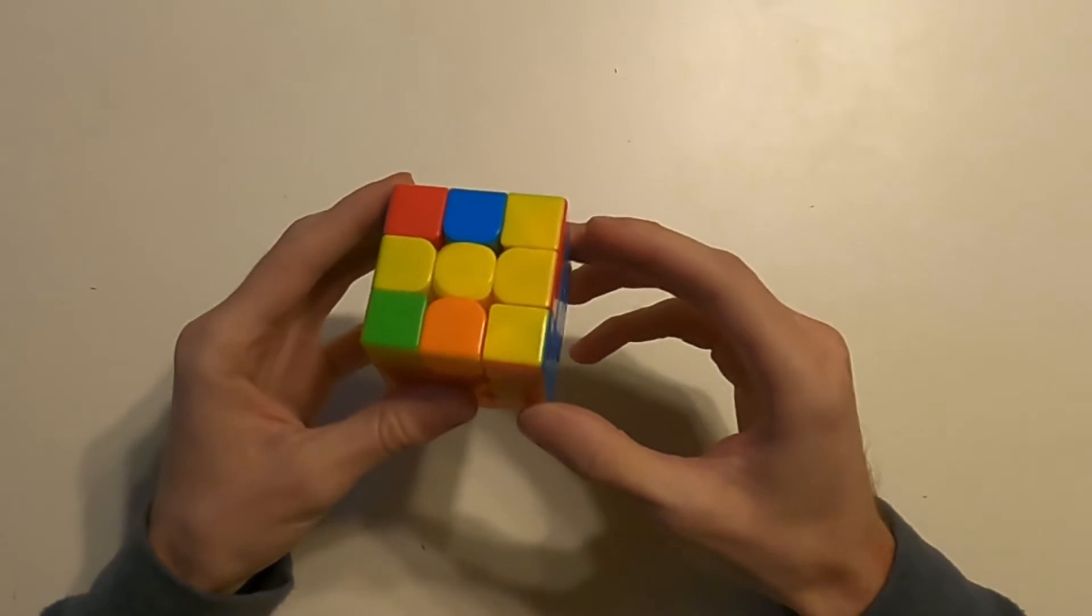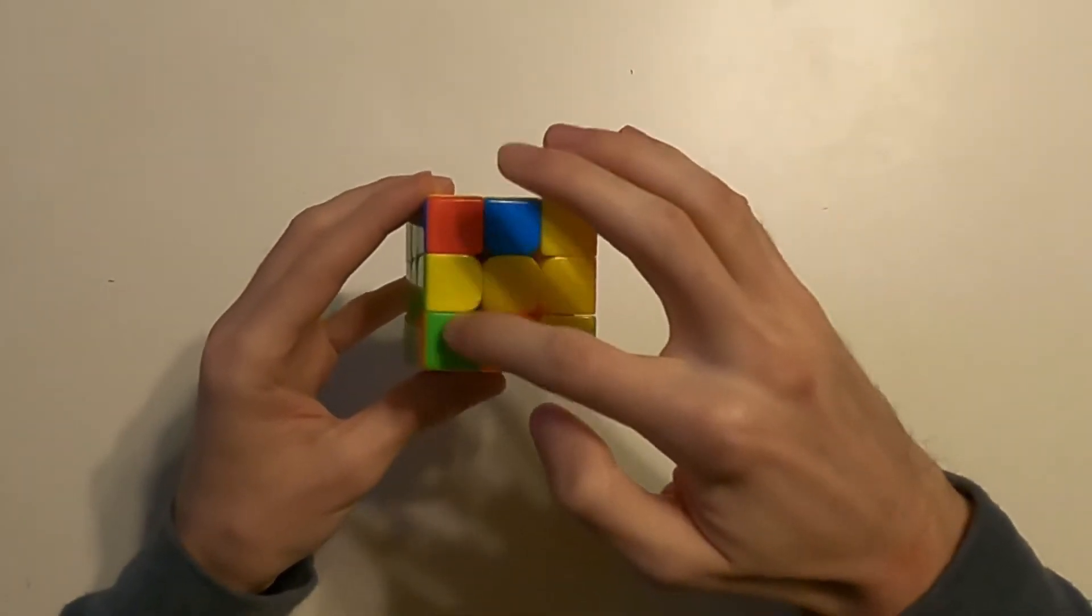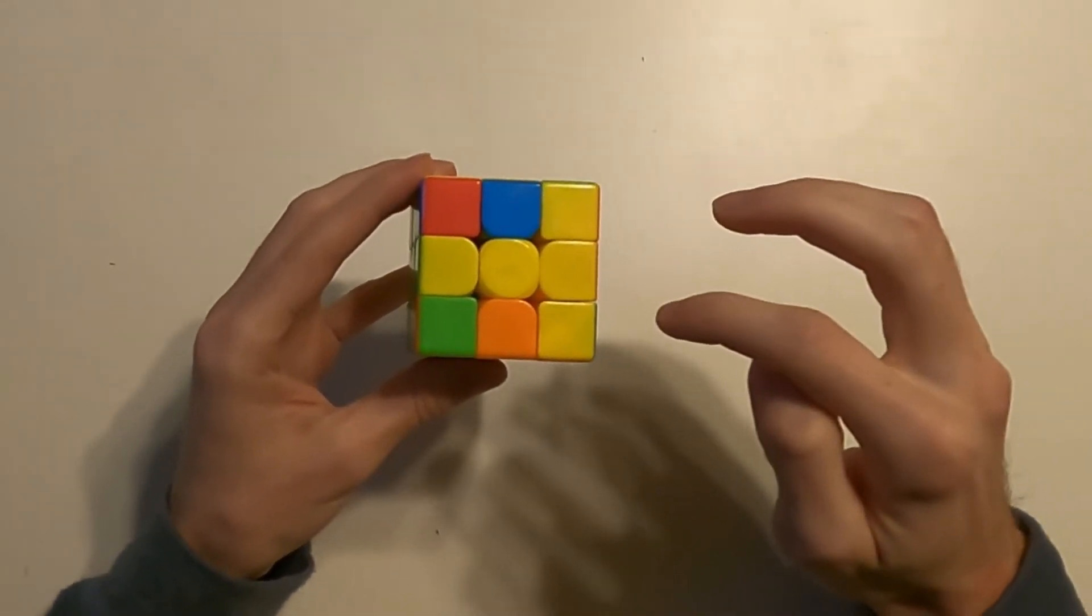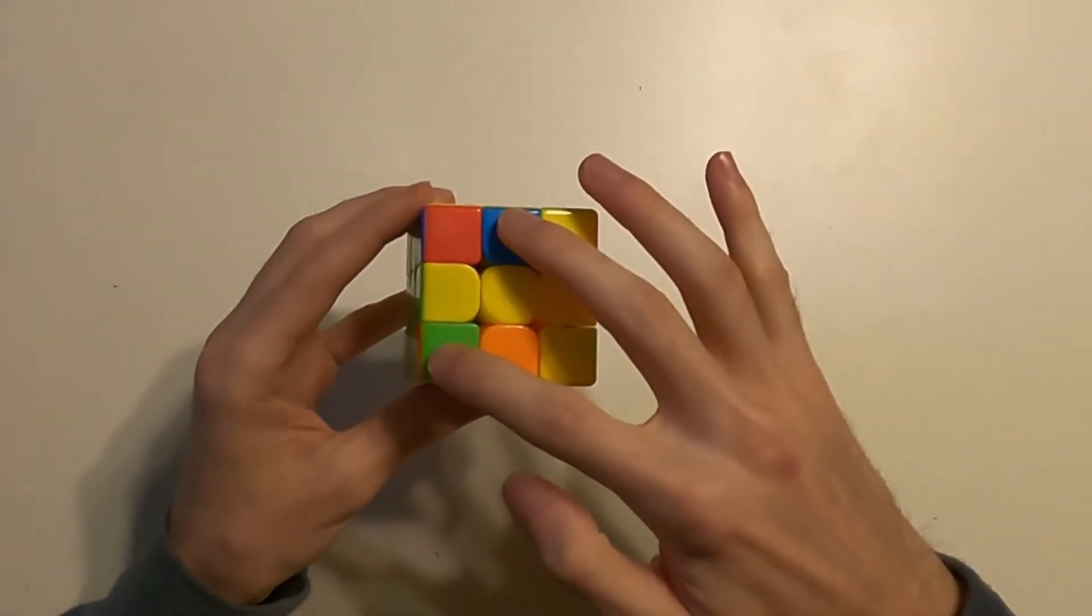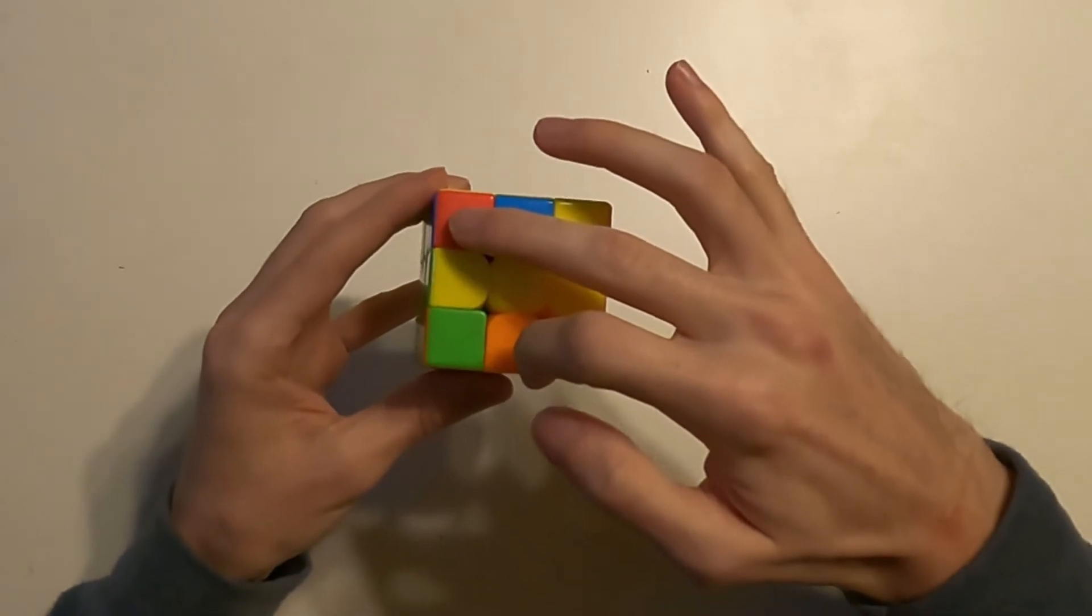To recognize this specific case, we'll see that there are four different colors on top that are not yellow: red, orange, blue, and green. You can also recognize that these two diagonal colors are opposite, and these two are also opposite.